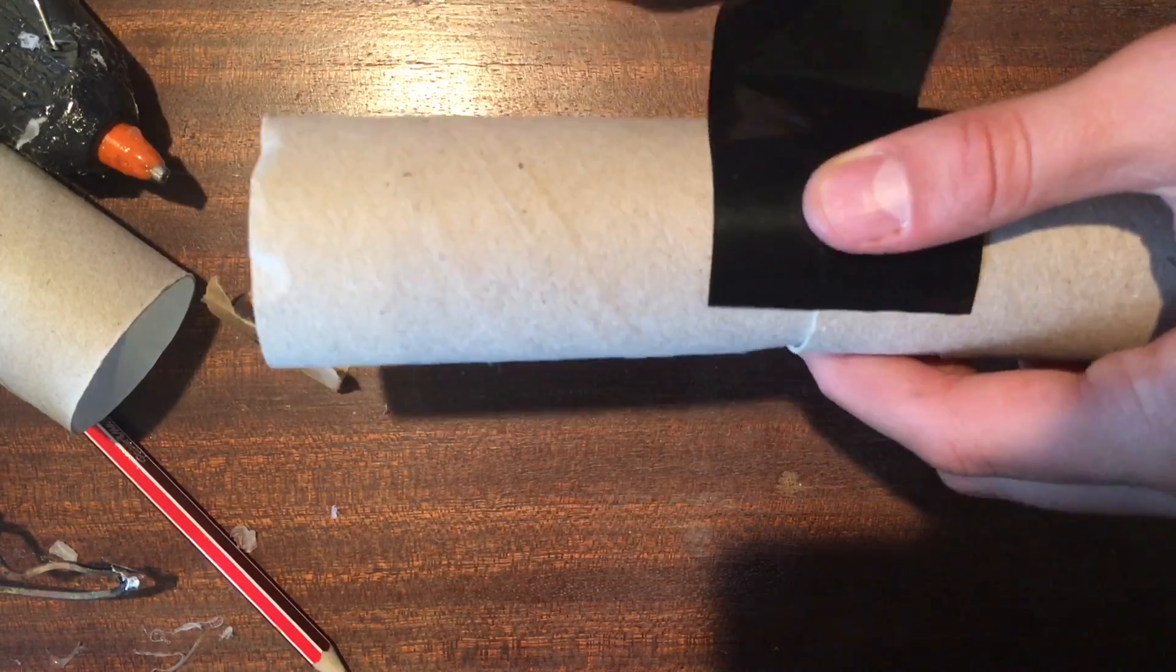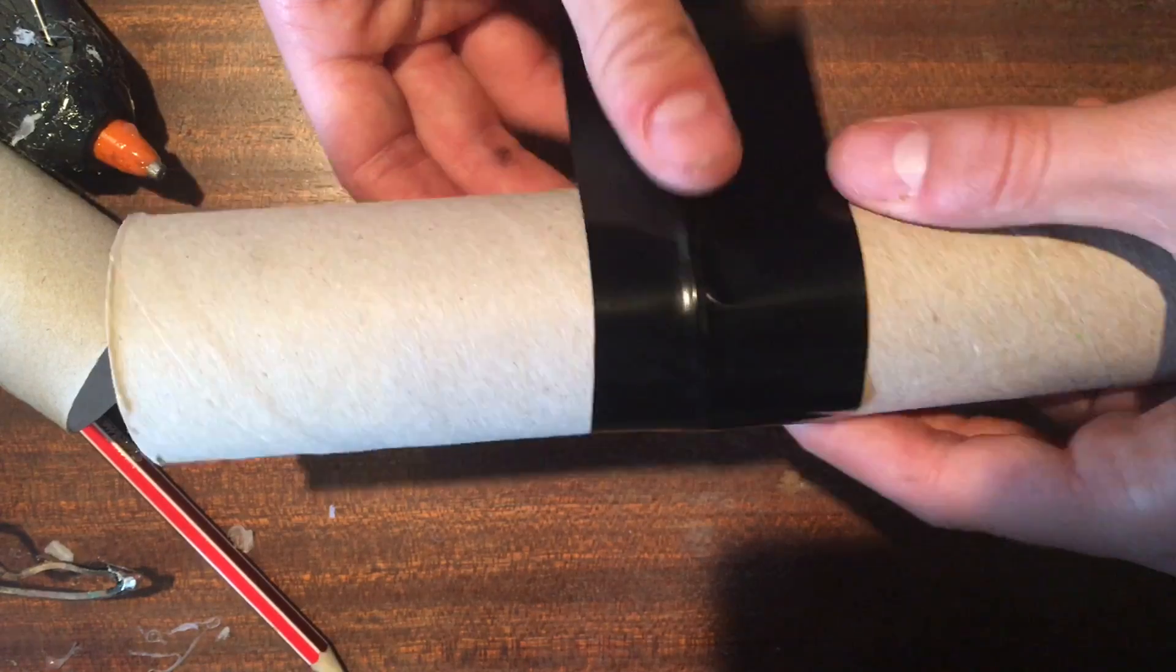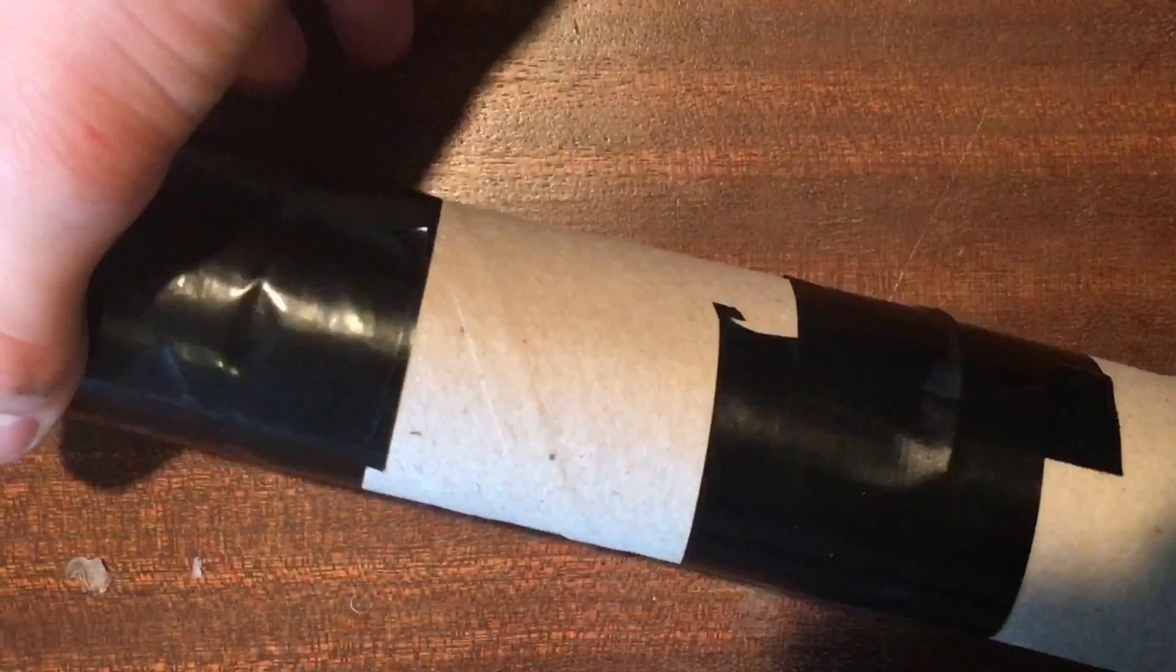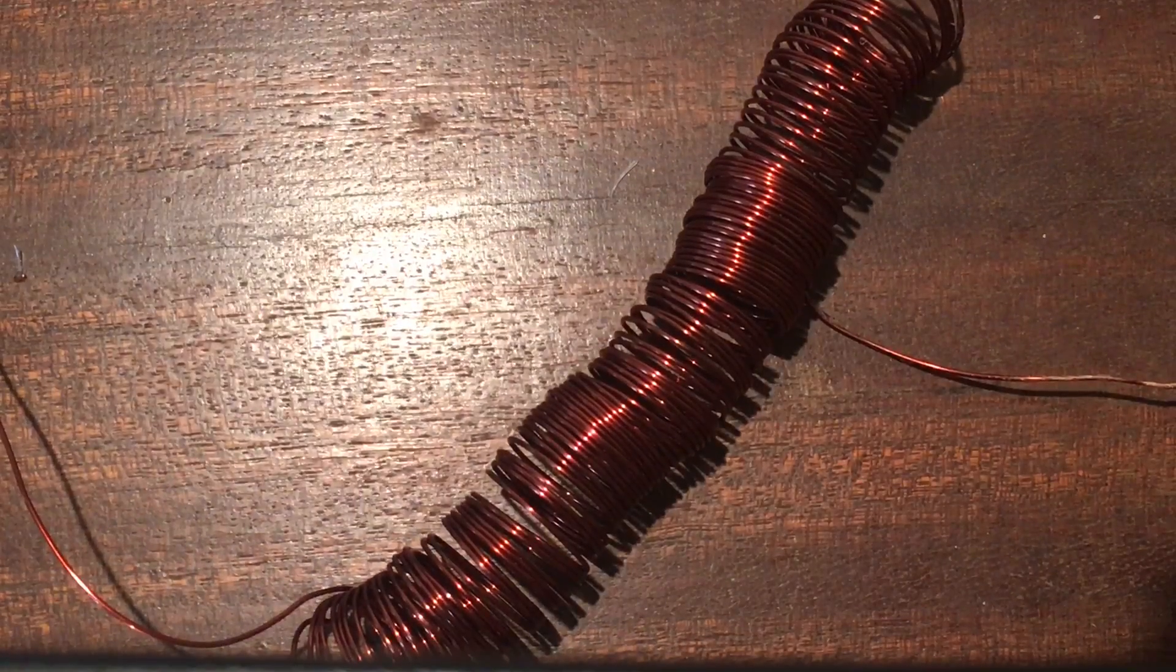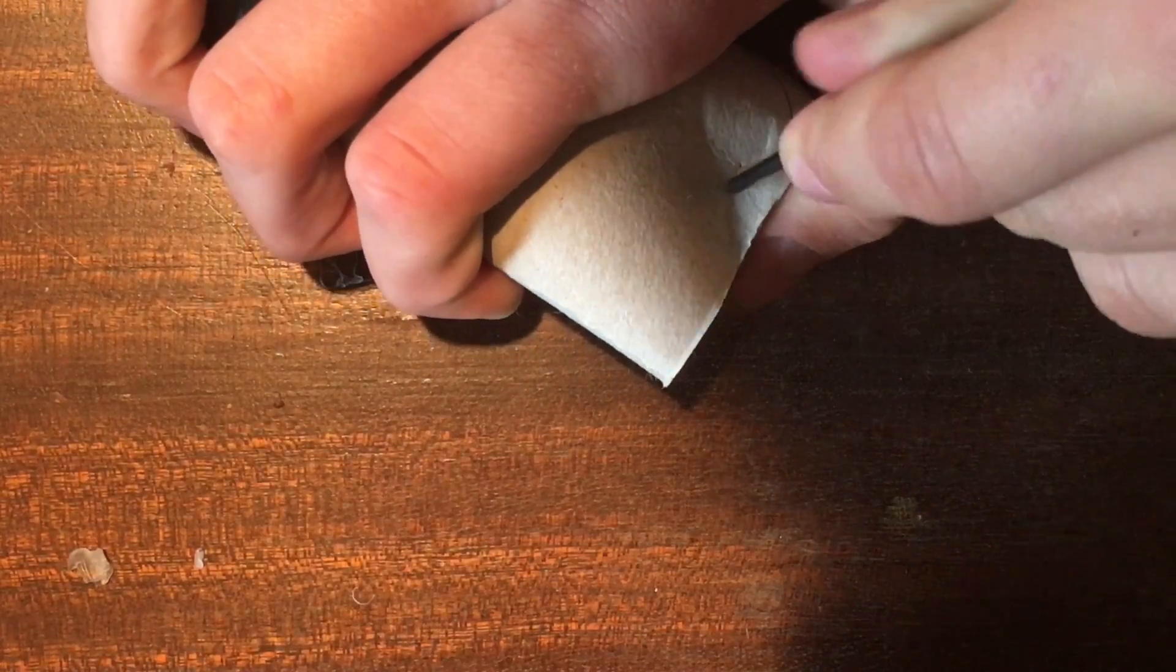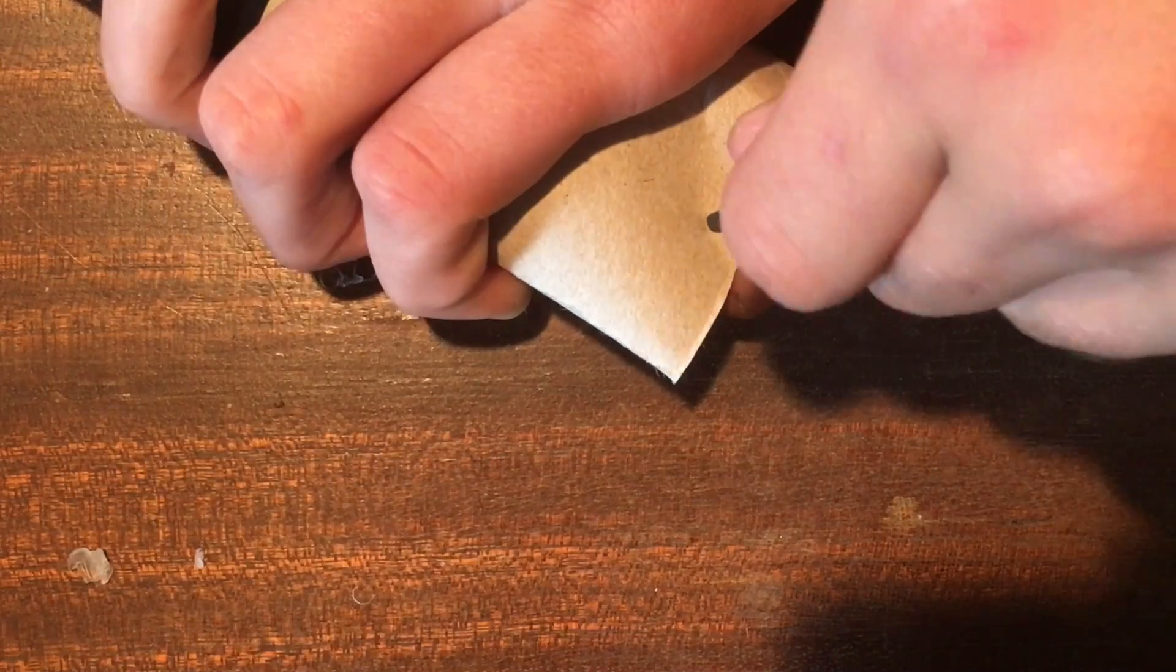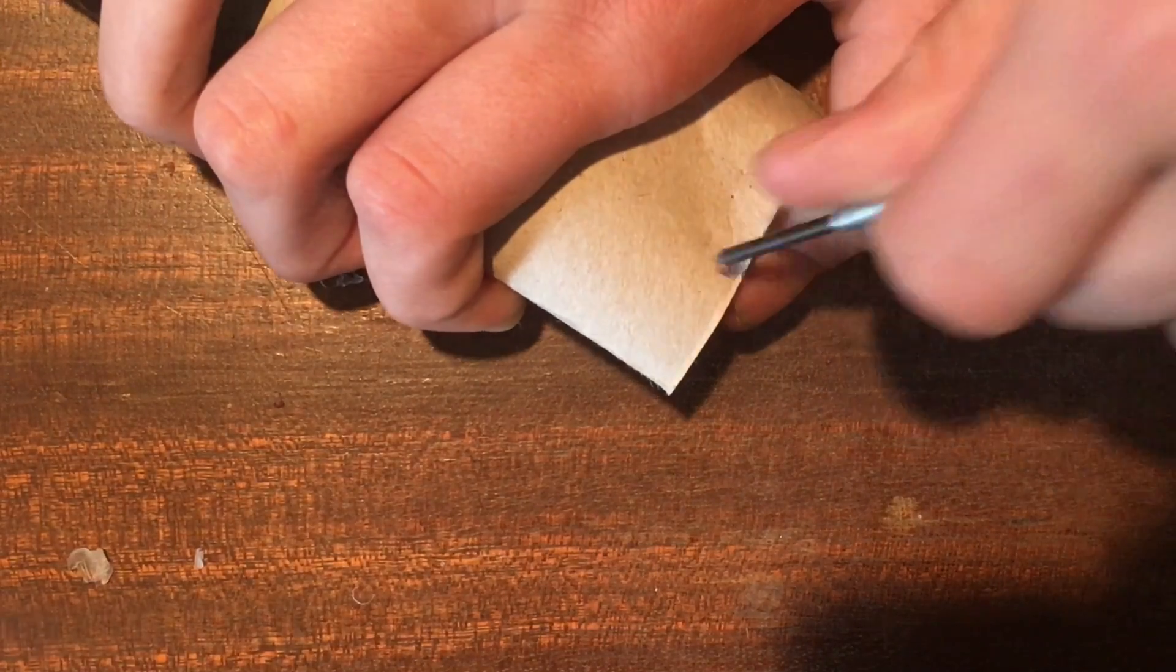Then tape three toilet rolls together like this. Make sure you do this next step so that your Tesla coil doesn't end up looking like that. Make a hole half a centimeter from the edge and then another one one centimeter away from that with a sharp object on the tube.